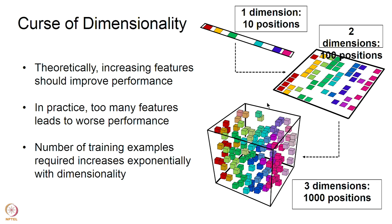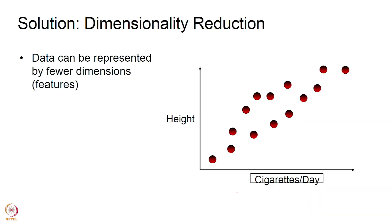This happens because we need more training examples if we have more features. Think of it this way: if you have only one dimension, you can sample that dimension with fewer data points. However, as the dimension becomes 2 you need more data points to sample the entire space, and as the number of dimensions keeps increasing, the number of points needed to sample the space increases too. So if you have many more dimensions and fewer data samples, you run into problems with training your algorithm.